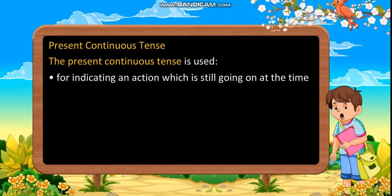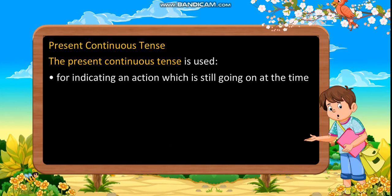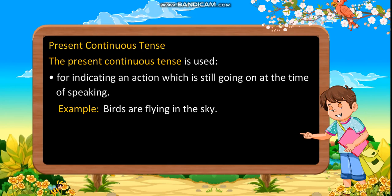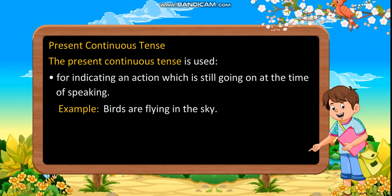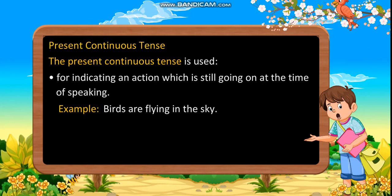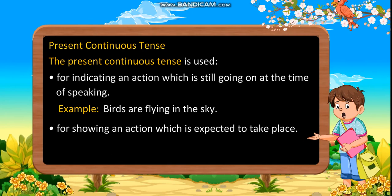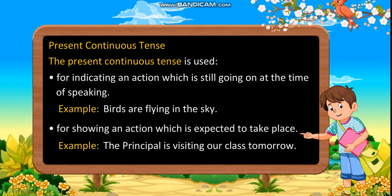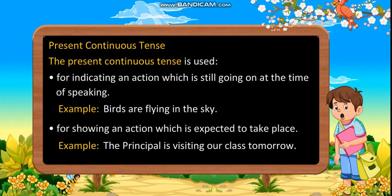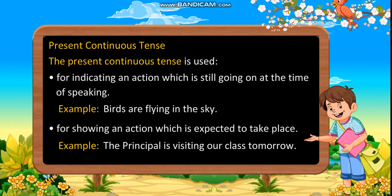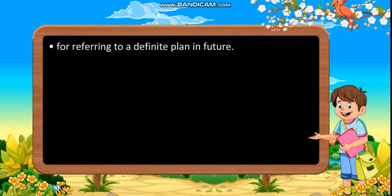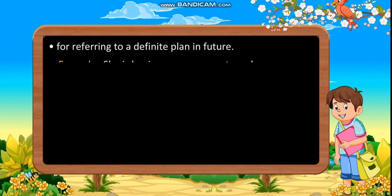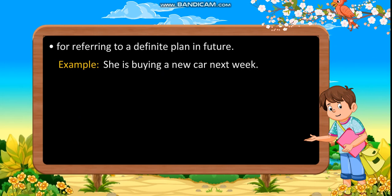Present continuous tense: The present continuous tense is used for indicating an action which is still going on at the time of speaking. Example: Birds are flying in the sky. For showing an action which is expected to take place. Example: The principal is visiting our class tomorrow. For referring to a definite plan in future. Example: She is buying a new car next week.